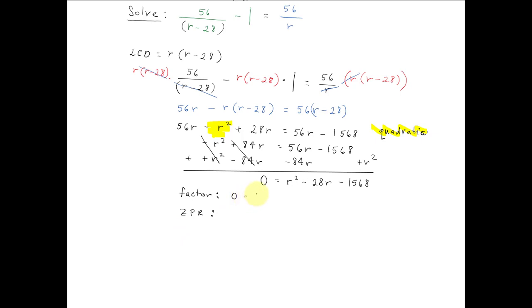We have to think about two numbers that multiply to be negative 1568, but add up to be minus 28. So we have minus 56 plus 28 in our factors. We can check minus 56 times 28 is negative 1568, and if I add these two together, I get negative 28r. Now let's go ahead and apply the 0 product rule.